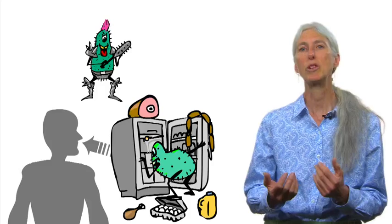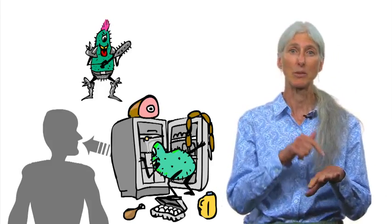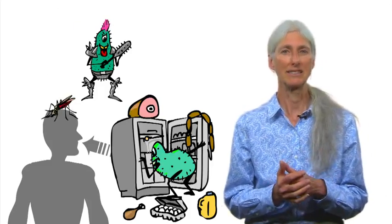The best routes for a pathogenic organism to gain entry to the body are via the air that we breathe or food and water that we ingest or by being injected through the skin by a biting insect.